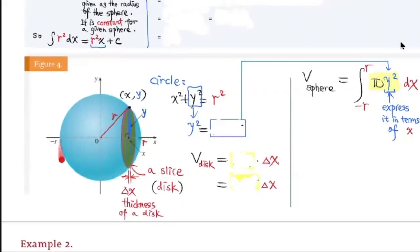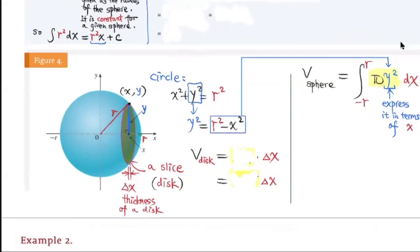This circle satisfies the equation x² + y² = r². So y² = r² − x². Now let's find the volume for one disk here. The volume for one disk will be the base area — which is πy² — times the thickness, delta x.